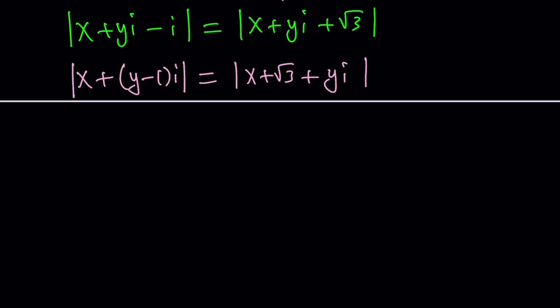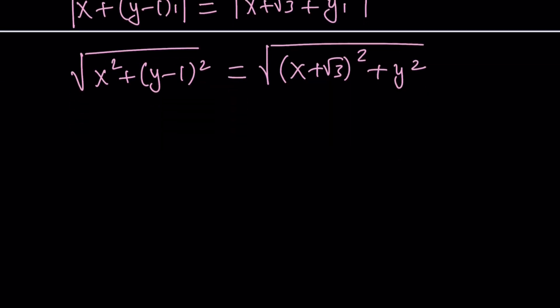From here we can write the absolute values. The square root of x squared plus y minus 1 squared equals the square root of x plus root 3 squared plus y squared. Now we're going to go ahead and expand it, but before we do that, why not square both sides to get rid of the radicals? Let's do that. Then we can expand it. Let's write down the next step first without skipping any steps. I would recommend that if you're new to this, don't skip any steps.